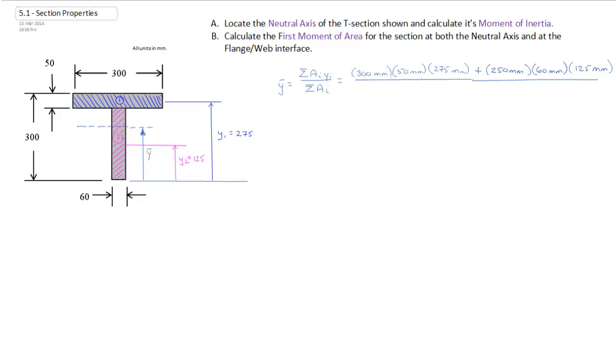And then underneath we have area total, which of course are just the area components of what we just wrote above the line. So 300 times 50 plus 250 times 60 millimeters.